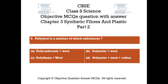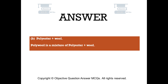Question number 8. Polywool is a mixture of which substances? Option A - polycarbonate and wool, Option B - polyester and wool, Option C - polythene and wool, Option D - polyester, wool, and cotton. The right answer is Option B, polyester and wool. Polywool is a mixture of polyester and wool.